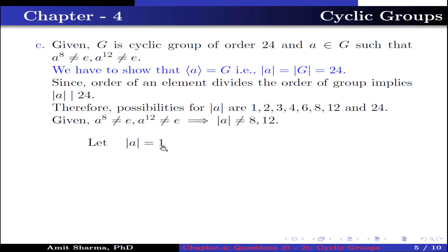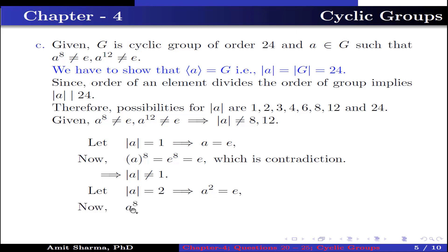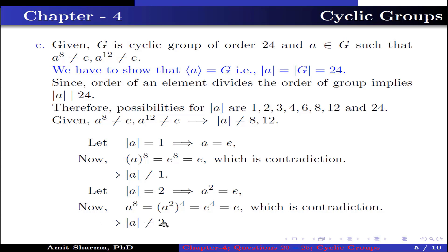Let order of A be 1, this implies A equals identity. Then A to the power 8 equals e to the power 8 equals identity, which is a contradiction since A to the power 8 is not equal to identity. So order of A is not 1. Let order of A be 2, this implies A squared equals identity. Then A to the power 8 equals (A squared) to the power 4 equals e to the power 4 equals identity, which is again a contradiction. So order of A is not 2.